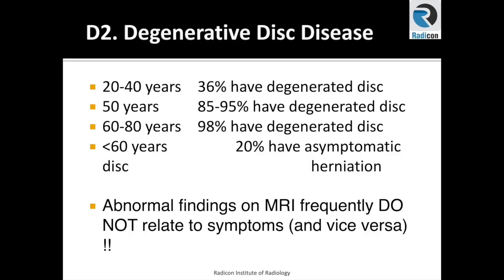The next point is disc disease incidence, which advances with age. As you can see on this graph, in the 20-40 years population, 36% will have a degenerated disc. At 50 years, 85-95% will have a degenerated disc in the cervical or lumbar spine. The incidence increases with age.